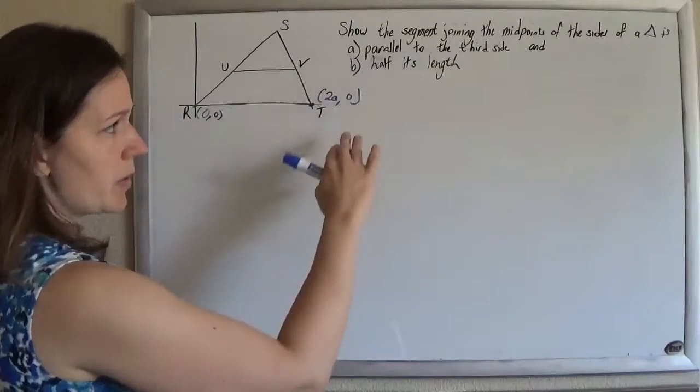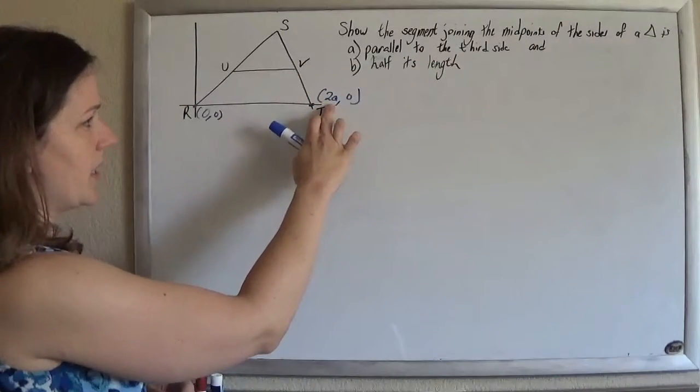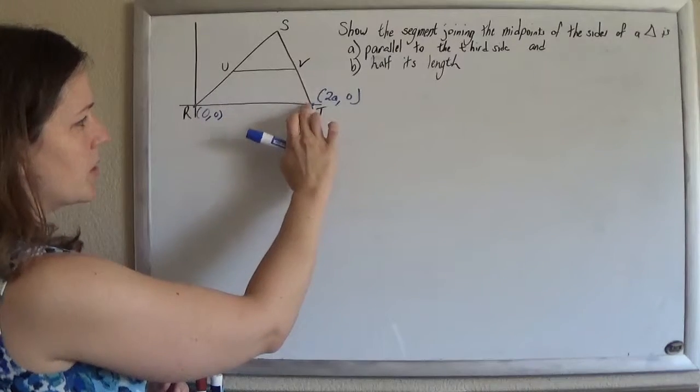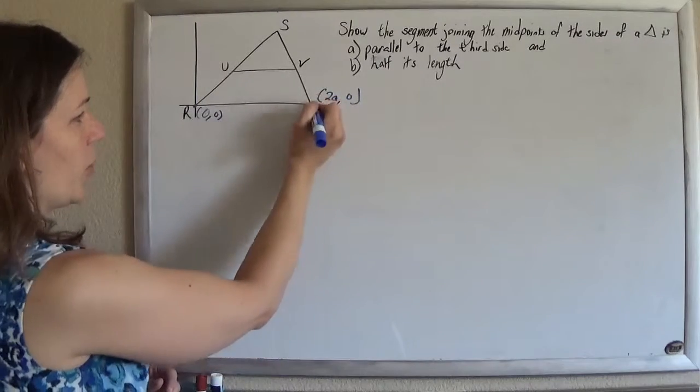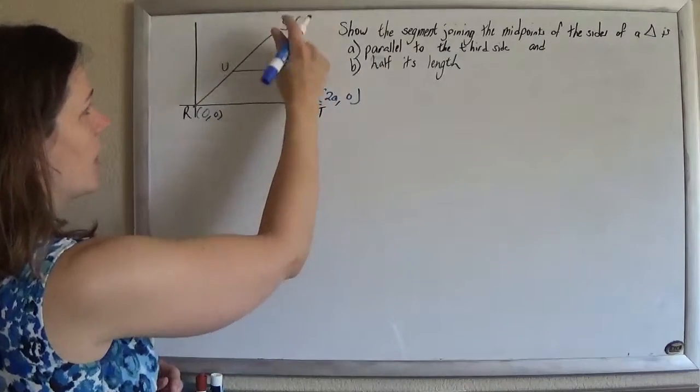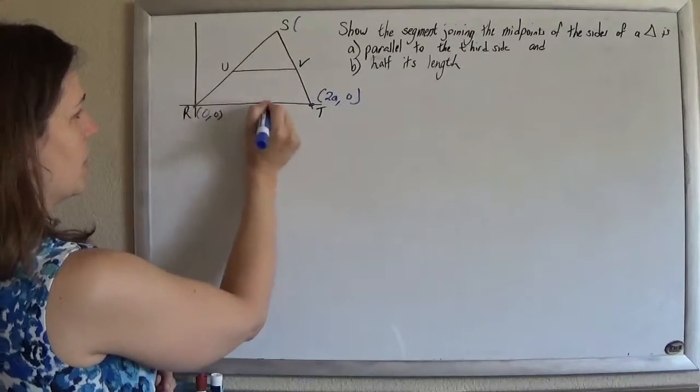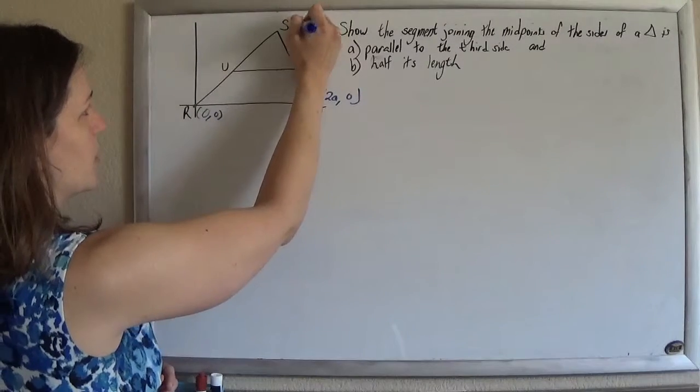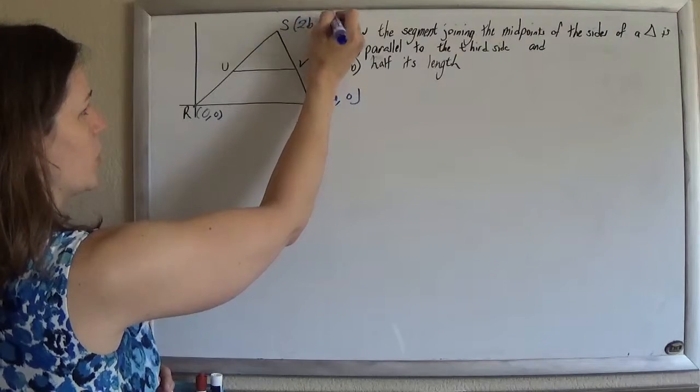But a lot of times when you're dealing with midpoints, it helps to just double these, so we don't go there. So if I call this 2a and then the y coordinate is definitely 0, this guy up here, it's not fixed anywhere, so it's just two separate points. I'll call it 2b, 2c.